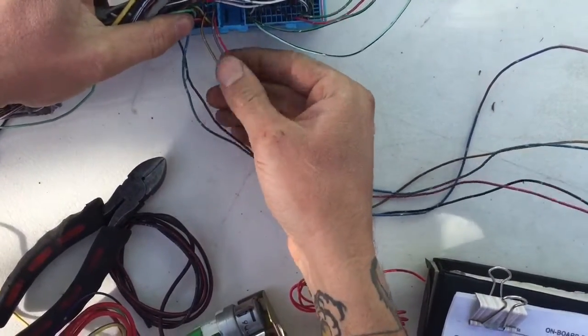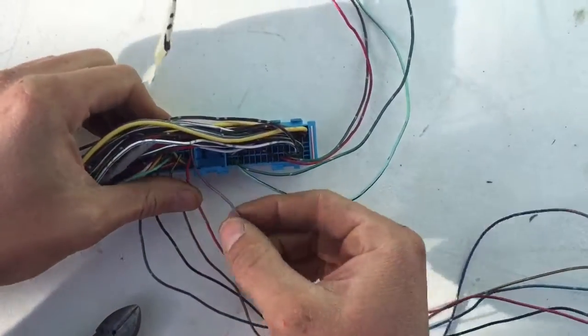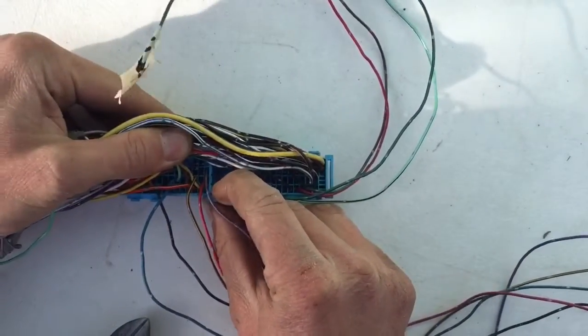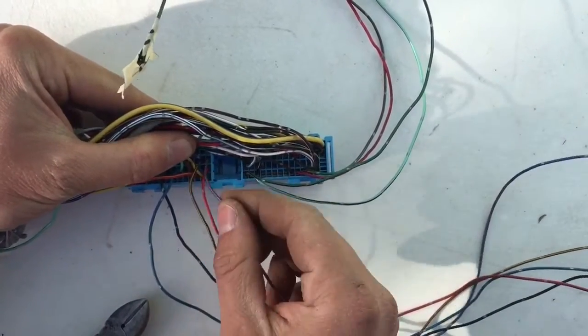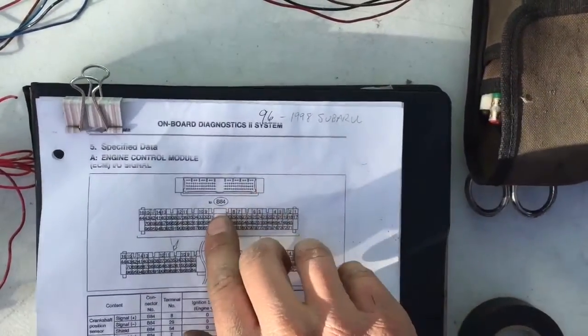Okay, next up we're going to do this blue and orange wire. If you can see it, it's the third row from the bottom up, first row to the left of the middle. So one, two, three - that's pin 31.